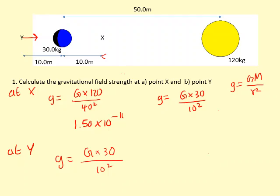The force from the yellow mass: we need to figure that out. It's going to be g = G times the mass of the yellow mass, which is 120.